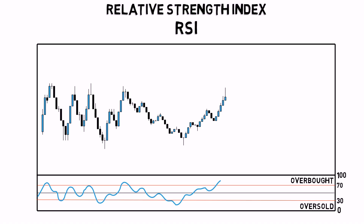The indicator also shows the current direction of the trend, with values above 50 indicating an uptrend and values below 50, a downtrend.